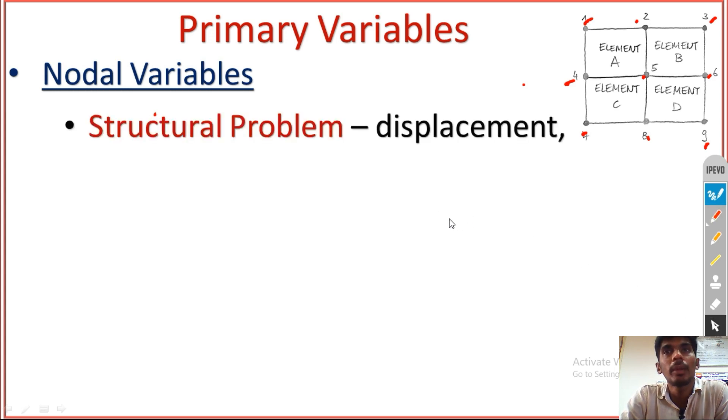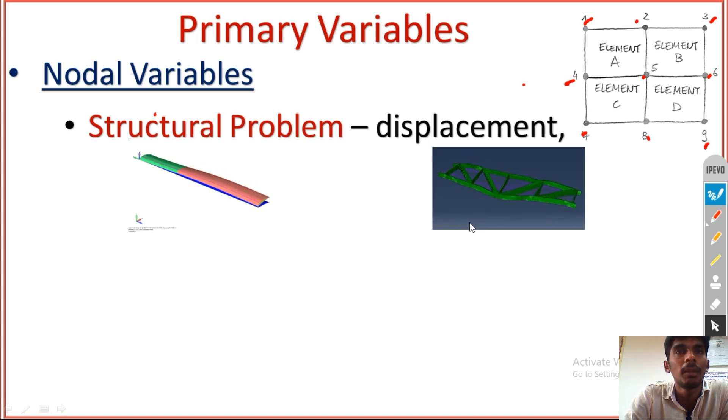Come to the structural problems. The main nodal variable is displacement. Here you can see some of the animated videos. Whatever load we are giving over the structure, it may be a dynamic problem, whatever it may be, the material tends to bend in any direction. It depends on the applied load. Here you can see the displacement occur in the angular direction. Here you see that displacement occur in the lateral direction. In structural problems, always primary variable has displacement.